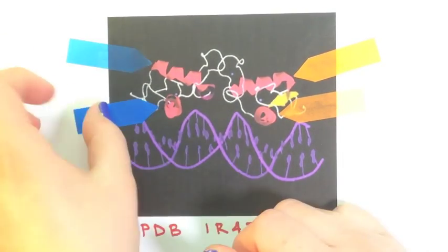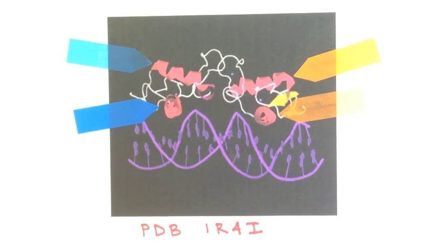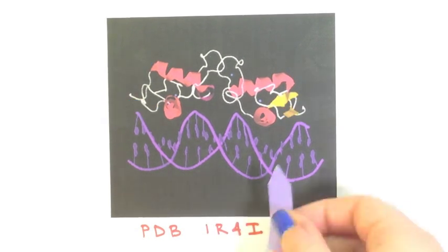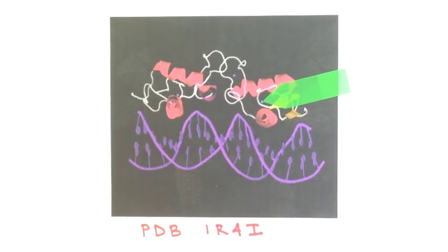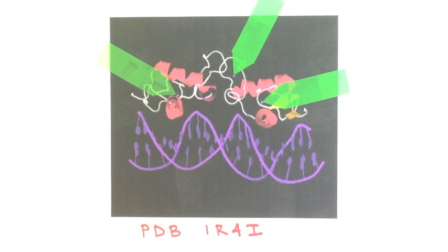These two sets of alpha helices are arranged as a helix-turn-helix motif, which allows for DNA binding because these alpha helices fit well in the major grooves of the DNA. These small gray dots are zinc ions and are characteristic of zinc fingers, which are structural motifs that help stabilize the folds in this domain and also help determine the binding specificity by creating these protrusions in the structure.